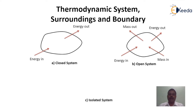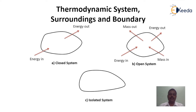Isolated system can be graphically represented in this way. It has a system boundary. Neither energy nor mass flow takes place across the system boundary. The example for isolated system is the universe.